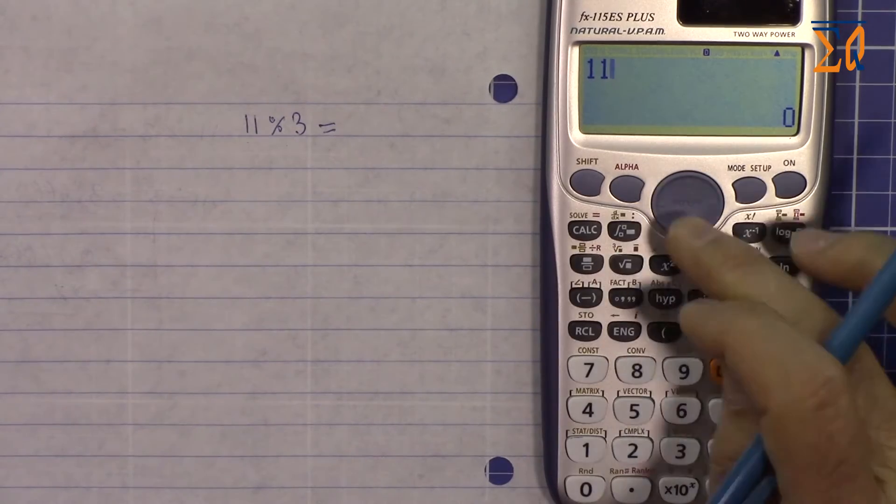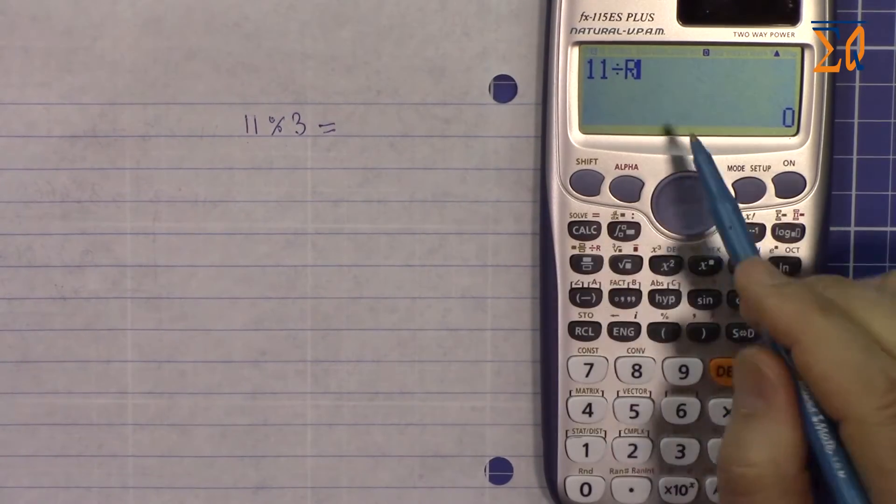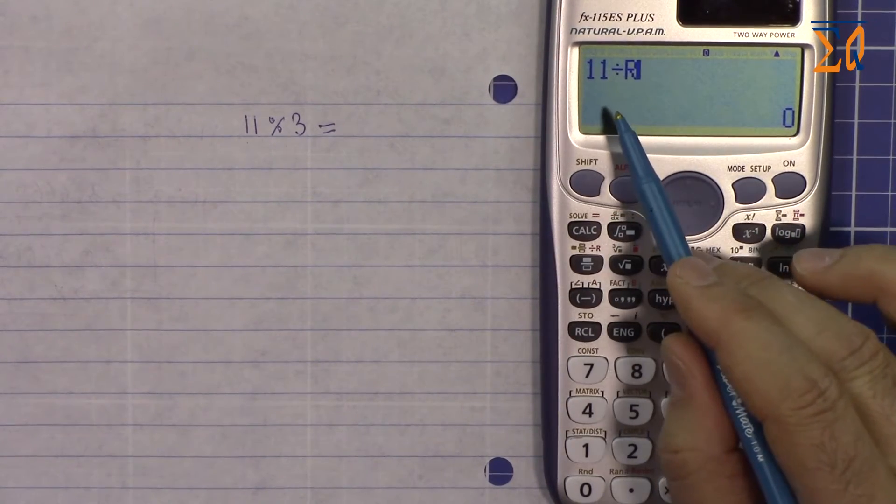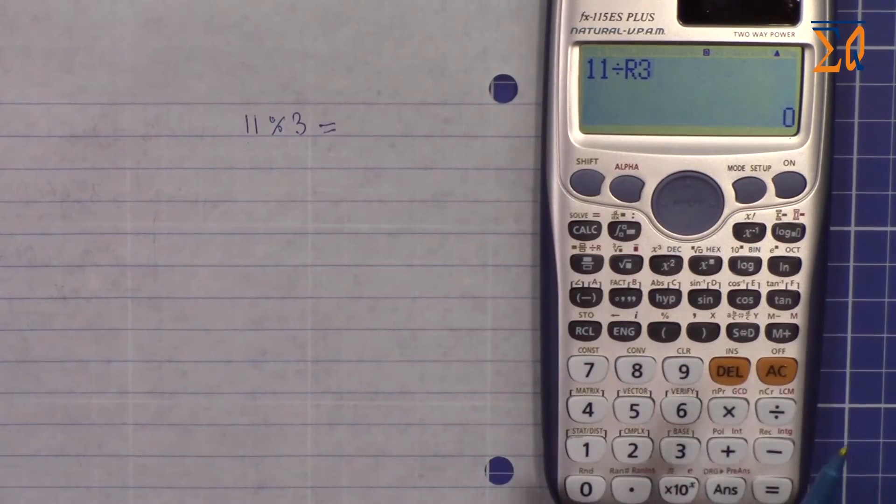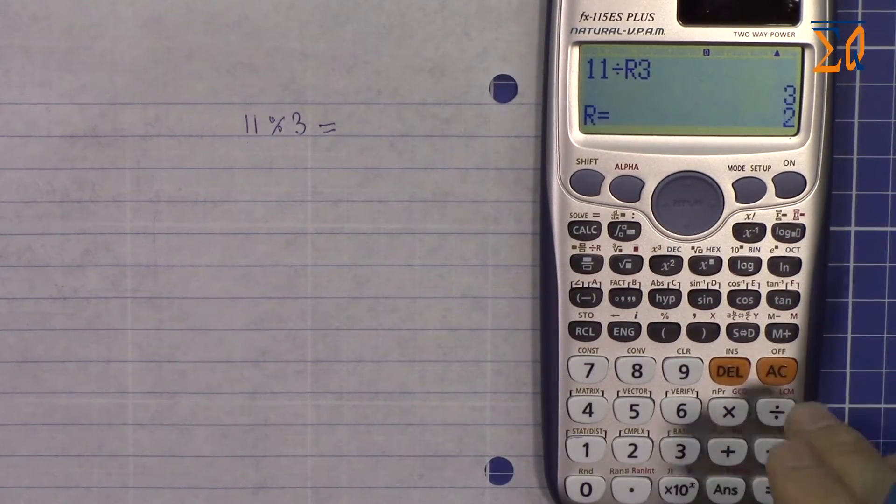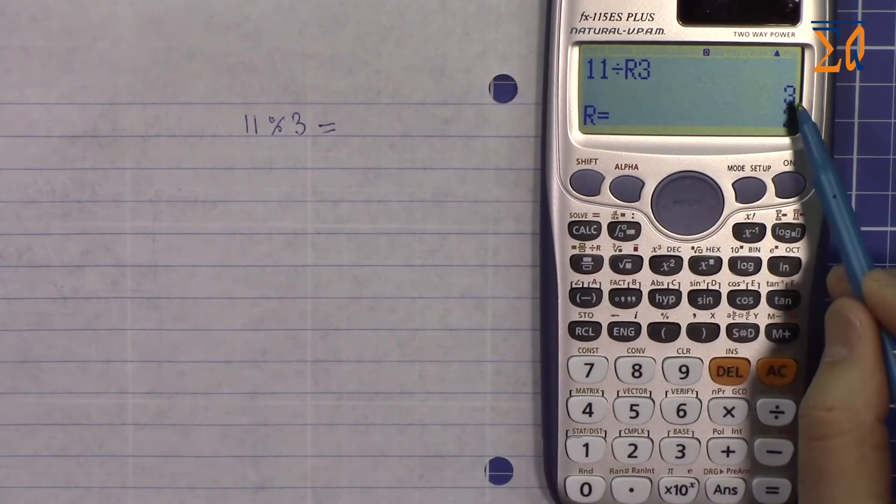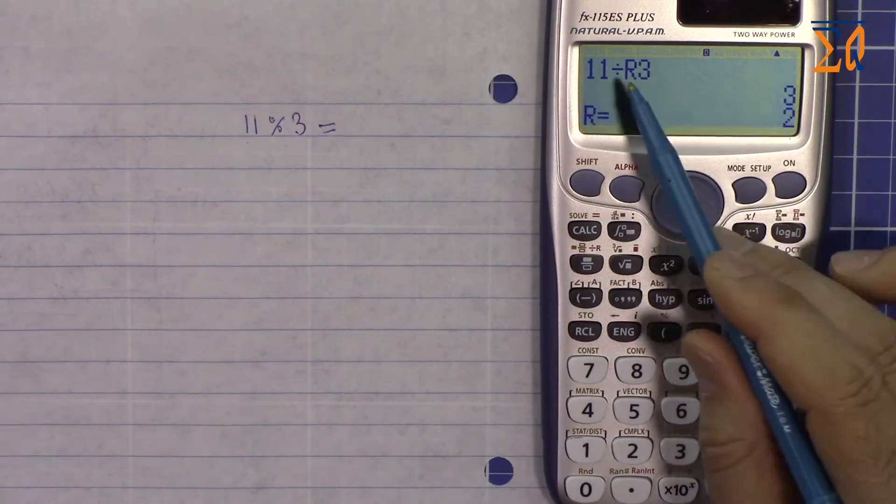Press alpha and this button, you will see the screen become like that, and 3. So equal sign, you will see here it shows 3, that's the result of a division, and then shows R, the remainder which is 2.